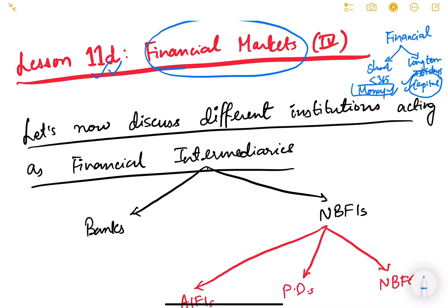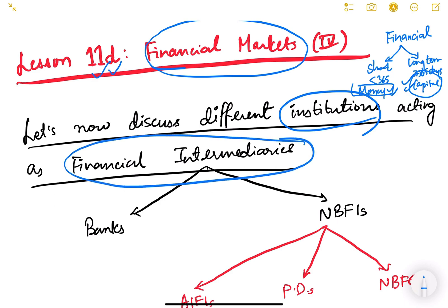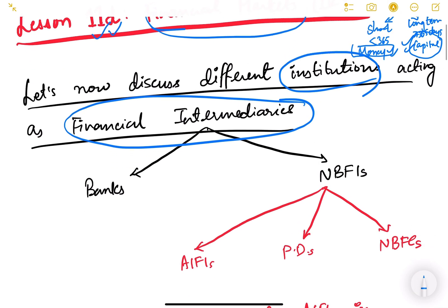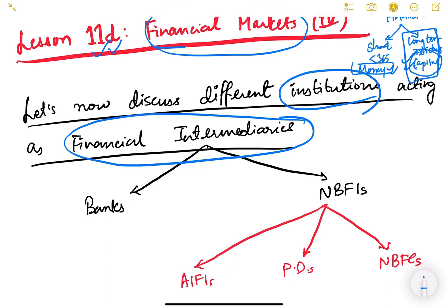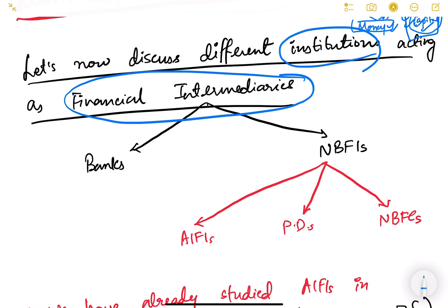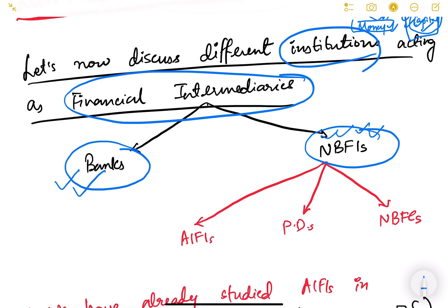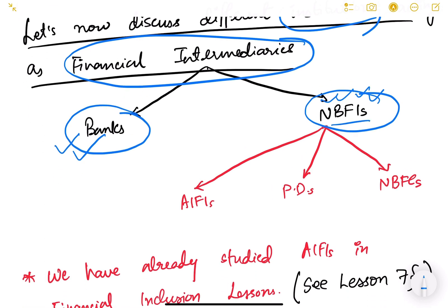We have already studied money markets in the previous video and capital markets we will cover after a few videos. In lesson 11B we studied different instruments and institutions in financial markets. Different institutions in financial markets are known as financial intermediaries. These are of two types: first is banks and second is NBFIs — non-banking financial institutions. Banks we have already covered in previous lessons.